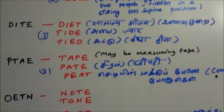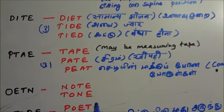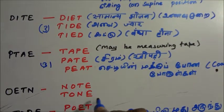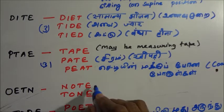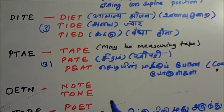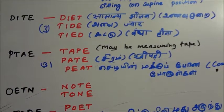O-E-T-N is another word from which we can form NOTE and TONE. N-O-T-E means notebook, T-O-N-E is a ring tone or something.